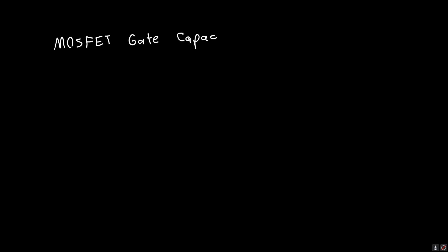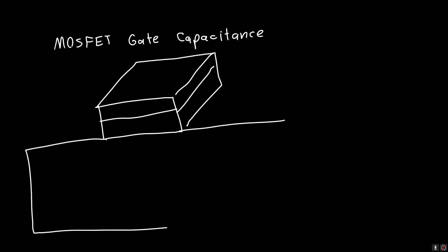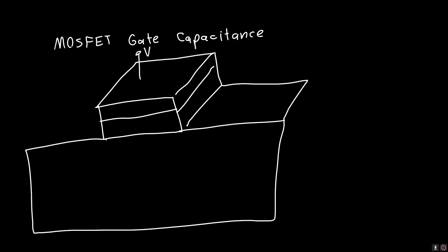In the last video we introduced the MOSFET gate capacitance, and the reason we call it a gate capacitance and not a gate-to-body capacitance will hopefully be clear by the end of this video. The basic idea is that the capacitance actually depends on the state of the channel — it depends on the gate voltage we're applying, VG, and on whether or not we have a depletion region and additional charge carriers.